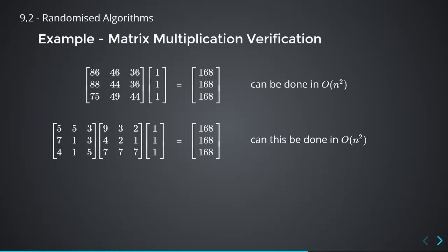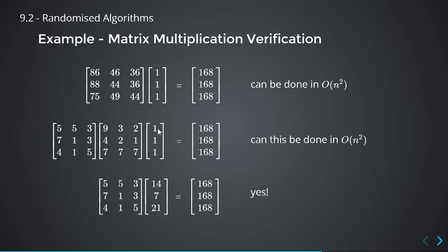If you choose your vector carefully, you only have to compute things like 8×6 + 4×6 + 3×6 and so on, and the multiplication can be done in O(n²) rather than O(n³). The key insight is: you multiply the right matrix by the vector first to get a different vector, then multiply that by the left matrix. So it is not O(n³) — you can do it faster. But you can still be wrong: if A×B ≠ C, but you chose a bad x, you might get A×B×x = C×x anyway, producing a false positive.